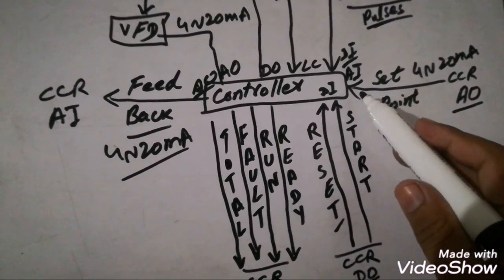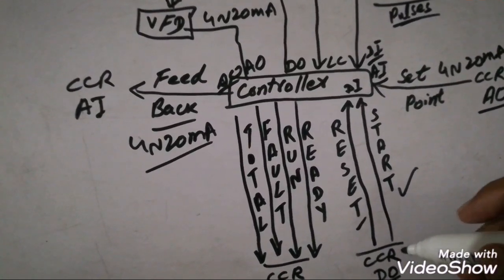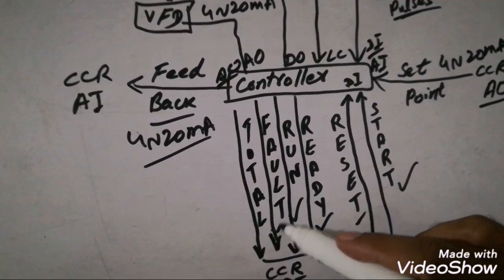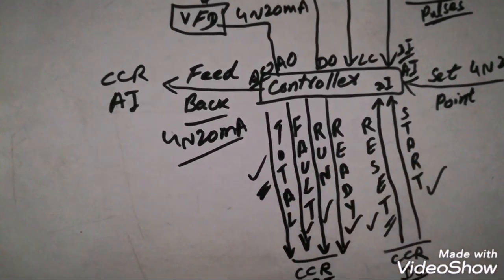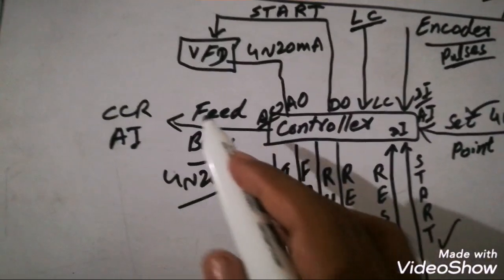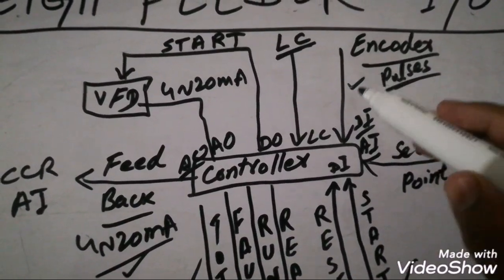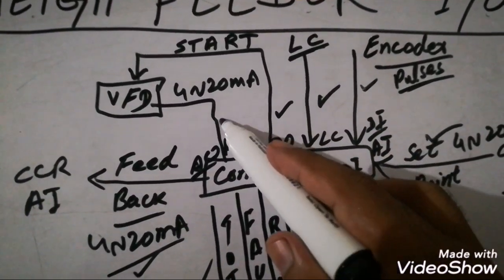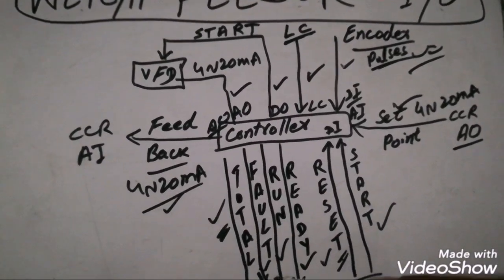These are the main inputs and outputs of the wave feeder. To summarize: the operator gives a start command; if the wave feeder is ready it starts running; if there is a fault, after rectification the operator can reset it. For each ton, the controller generates a pulse. The feedback is 4 to 20 mA, along with encoder pulses and load cell signals. The controller also sends a start command and analog set point to the VFD.